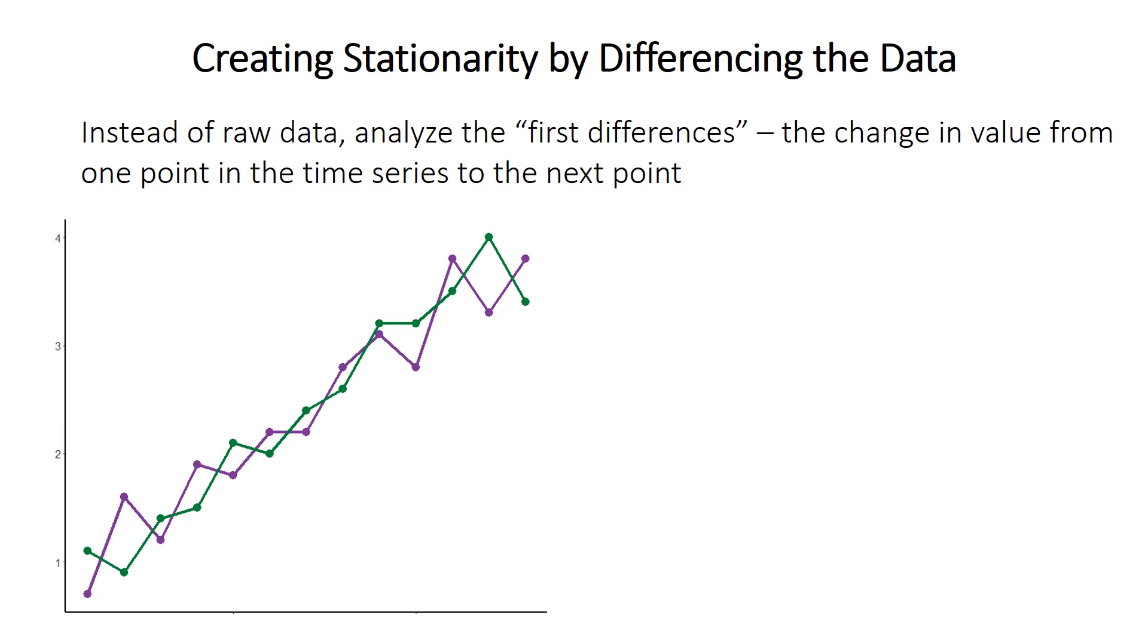So for example, the first difference between this point here in the green time series and this point here, the one just before it, is just the value of one minus the value of the other. So it's the change from one point to the next. So basically, the first difference is instead of looking at raw data, we're looking at change. So we look at all pairs of points along here to get our time series of first differences instead.